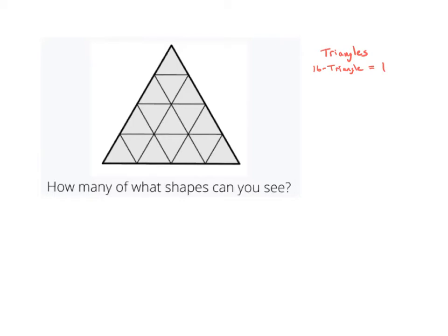The reason I'm calling that a sixteen-triangle is just to help label what shape I'm referring to. I do see a slightly smaller triangle right here that is made out of nine triangles. In fact, I can see another one of those right here, and there is also one more right up here at the top — so nine-triangles: three of them.